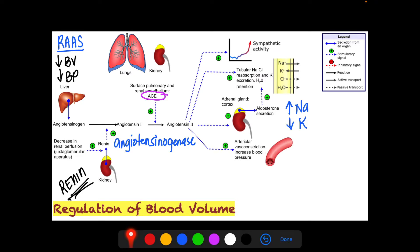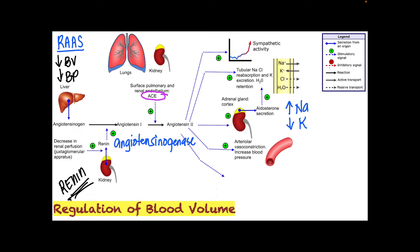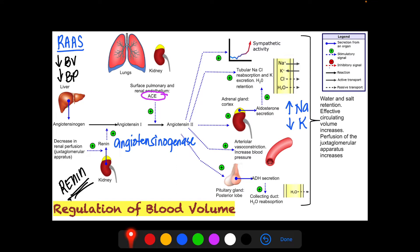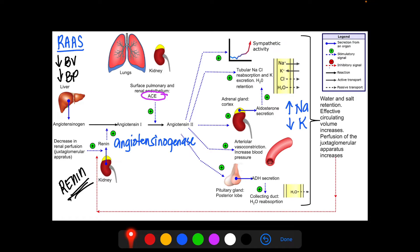Angiotensin-2 also stimulates the adrenal cortex to produce aldosterone. Aldosterone has two main functions: it increases sodium in the blood through reabsorption and decreases potassium through excretion. Additionally, angiotensin-2 activates vasoconstriction to increase blood pressure, and it stimulates the posterior pituitary gland to produce antidiuretic hormone, or ADH. ADH stimulates the collecting duct of the kidney to reabsorb water. When blood pressure and blood volume return to baseline, negative feedback stops renin production from the kidney.